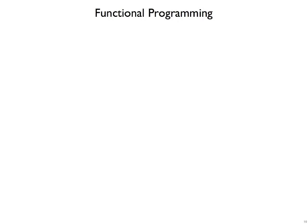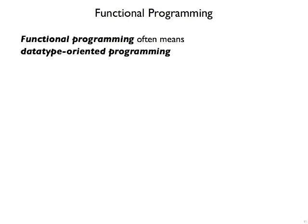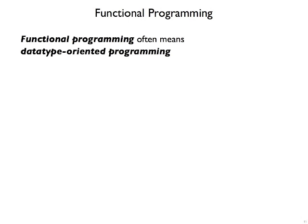There's one more implication of functional programming in practice, and that's that it often means data-type oriented programming. We've talked a lot about writing functions that match the shape of the data. So that if we have a data-type shape with three different variants, then the way that you implement a function on shapes is that it has to consider the three different variants explicitly.